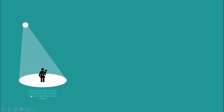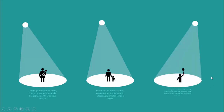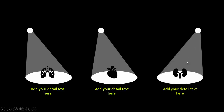Then you can see 'Add your detailed text,' and the next spotlight uses an icon where a father is holding the hand of his son or daughter, and the third one is just playing. This kind of information you can provide with the help of this animation. I have also added one more slide with a dark black background with some body parts icons.